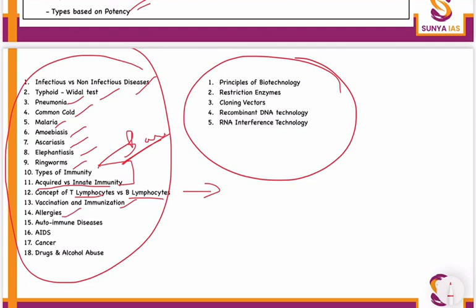Then do vaccination and immunization, allergies, autoimmune diseases, AIDS, and cancer. For AIDS, cover whatever disease, treatment, or tests are mentioned in NCERT for tomorrow's test. Regarding initiatives like Project Ahana, Red Ribbon Express, and Project Sunrise for the Northeast Region — along with national and international AIDS initiatives — those will be dealt with in the next class. Also, drugs and alcohol abuse is mentioned, including plants like poppy and the concept of opium — do read them from NCERT.